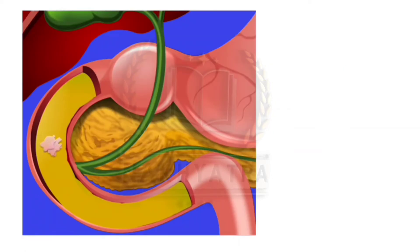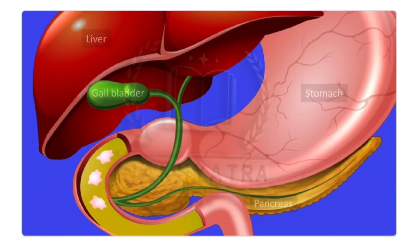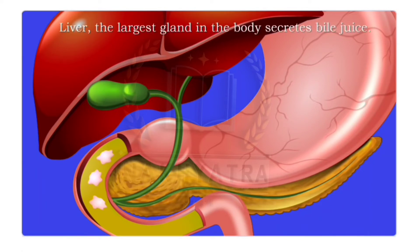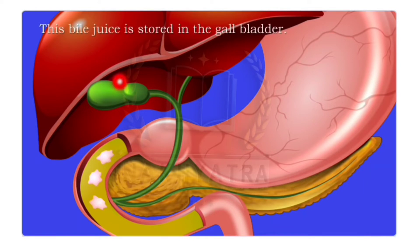As you can see here, food is entering from the stomach into the small intestine. This is the stomach, this is the gallbladder, this is the liver, and behind the stomach the pancreas is present. The liver, which is the largest gland in the body, secretes bile juice. This bile juice is stored in the gallbladder.